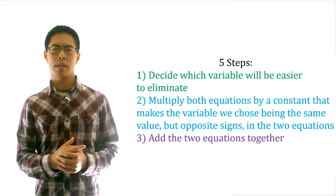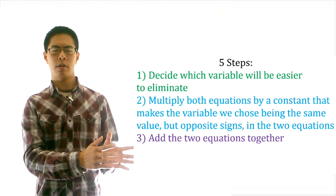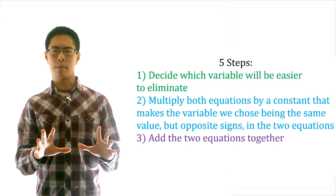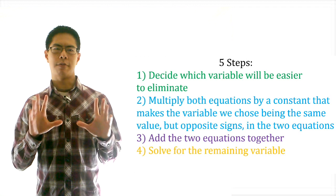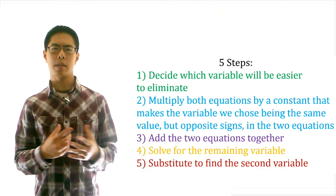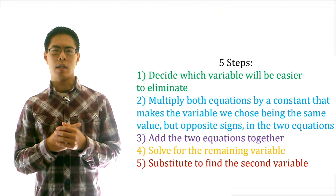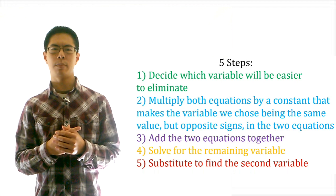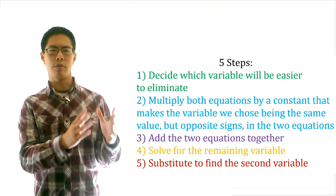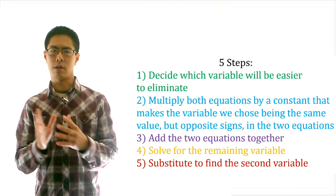The third step is to add the two equations together, which will eliminate that variable. The fourth step is to solve for the remaining variable, and the fifth and final step is to plug the variable we found back into one of the original equations to find the second variable.